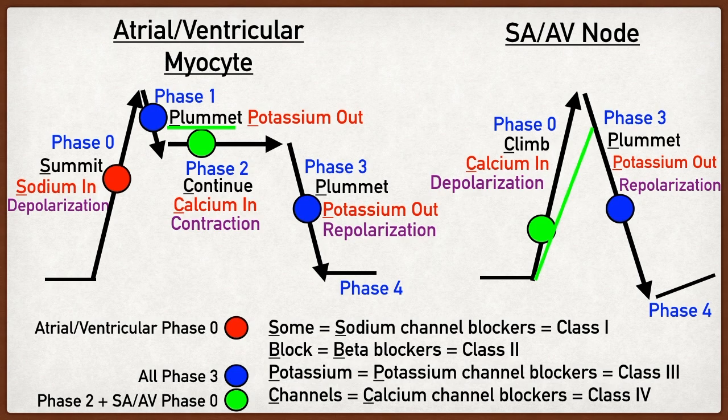The final class of antiarrhythmics is class two — the beta blockers. Beta blockers do not act specifically on ion channels, but they act on beta receptors. The sympathetic nervous system releases catecholamines such as norepinephrine and epinephrine that act on beta receptors in the heart to increase heart rate and cardiac contraction. Beta blockers block these beta receptors. Starting with contraction, they bind to beta-1 adrenergic receptors in the non-pacemaker cells of the atrium and ventricles, blocking phase two — the contraction part of the action potential — and thereby decreasing cardiac contraction.